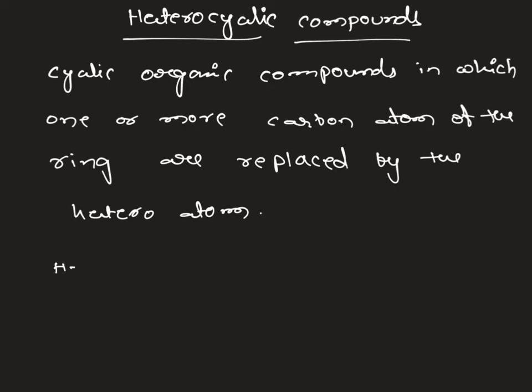Heteroatoms may be nitrogen, oxygen, phosphorus, or sulfur. These all we call heteroatoms. So one of the carbons is replaced by either nitrogen, phosphorus, or oxygen — those we call heterocyclic compounds. Let's take a simplest example.